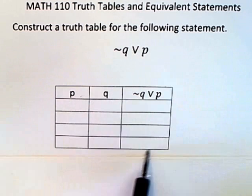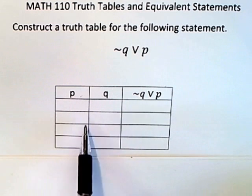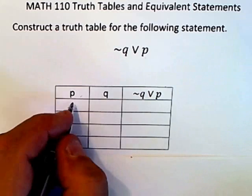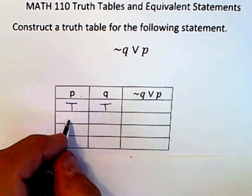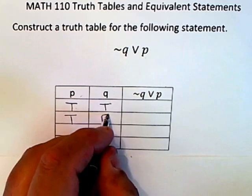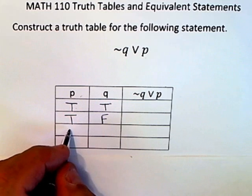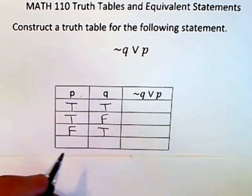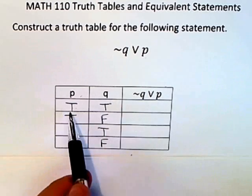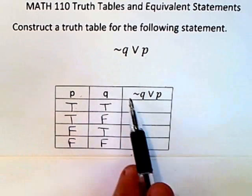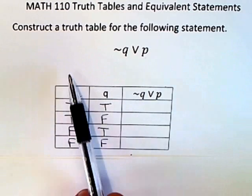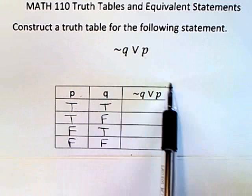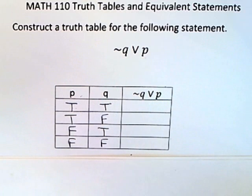What they're really asking you to do is construct something like this where you've put every possibility that can happen for the two statements P and Q. So you know that P could be true and Q could be true, P could be true and Q could be false, P could be false and Q could be true, or they both could be false. Then you're going to do the truth values for each combination and put them over here. When they ask you to construct a truth table, the answer is essentially this table itself with everything filled in.